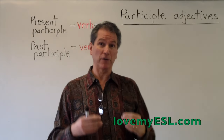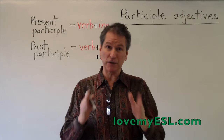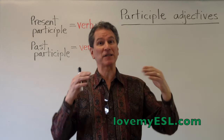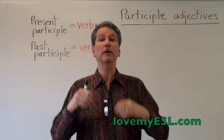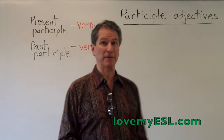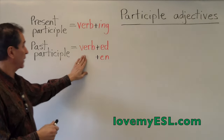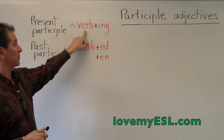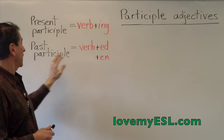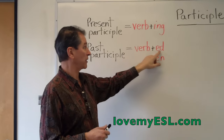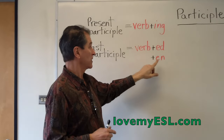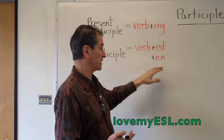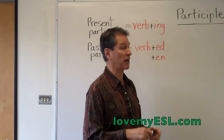Participles come from verbs. So the word starts out as a verb, something like 'interest,' and then you add -ing: 'interesting' — that's the present participle — and 'interested' — that's the past participle. The present participle is the verb plus -ing, and the past participle is the verb plus -ed. Sometimes it's -en, and sometimes the past participle is an irregular verb, which you just have to learn.